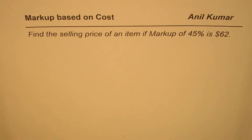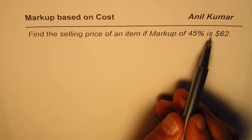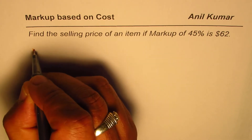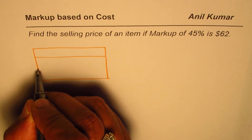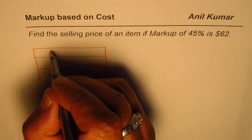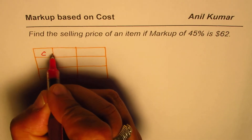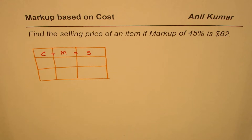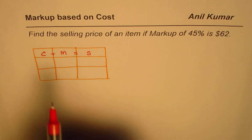I'm Anil Kumar. Here is an excellent question on markup based on cost. The question is: find the selling price of an item if markup of 45% is $62. So we have to find the selling price. Let's make our three-by-three matrix or table to solve these kinds of questions. We have cost plus markup equals sale price — that's the standard thing which we all know.